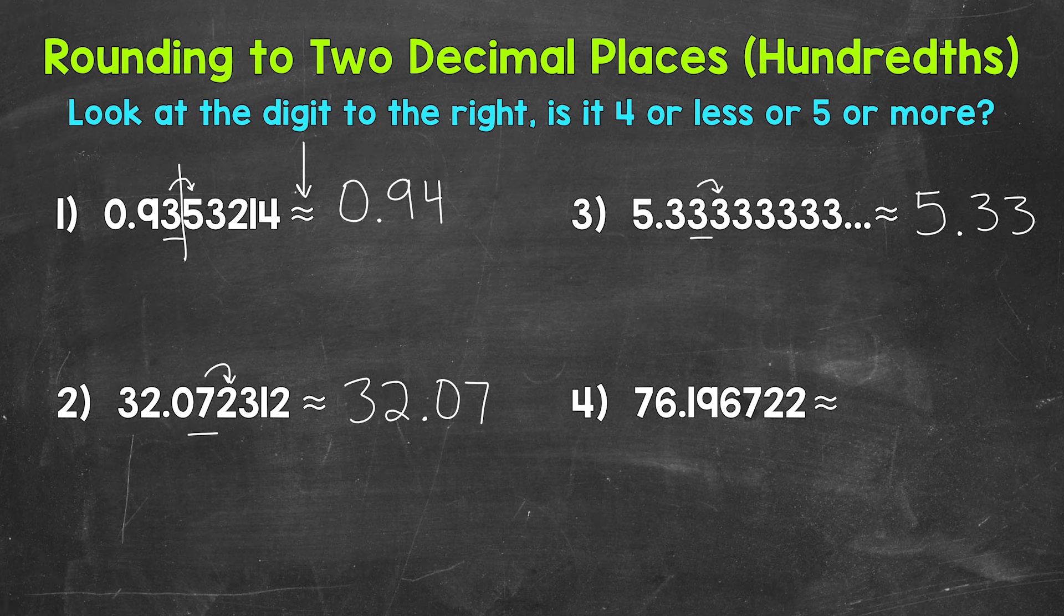Let's move on to number four where we have seventy-six and then some decimal digits. There's a nine in the hundredths with a six to the right in the thousandths. Six is five or more, so we round up. Now we are rounding up a nine. When we round up a nine, we get ten.